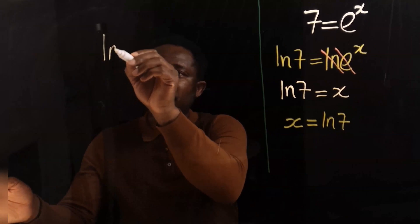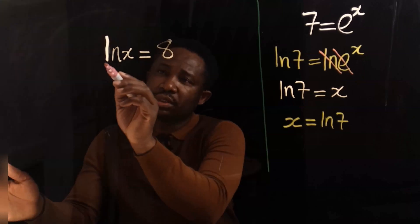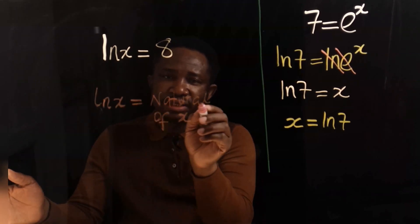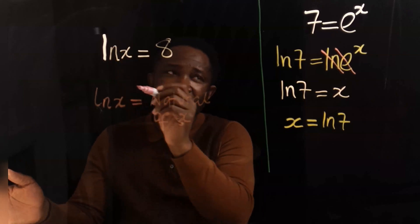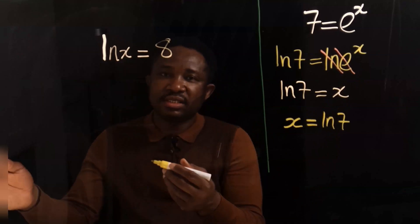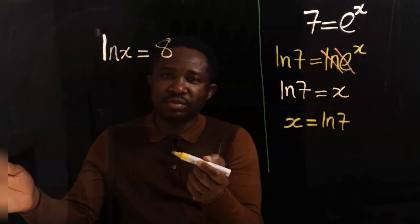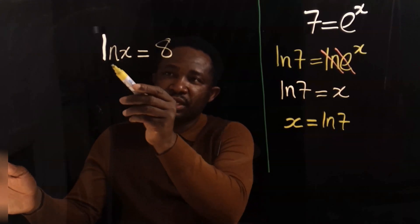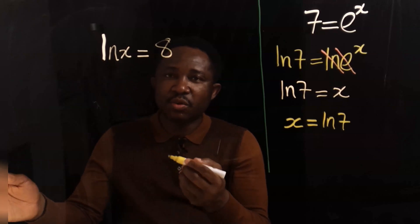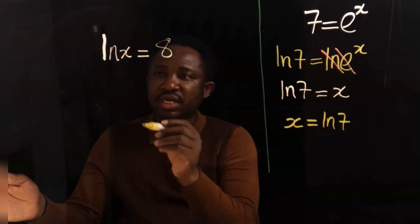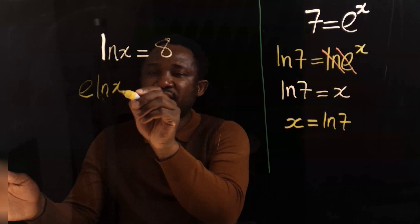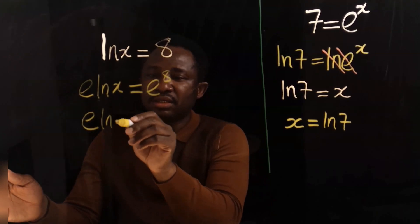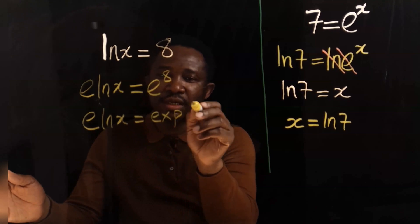Let's consider that the natural log of x equals 8. This ln is written as ln x, which simply means the natural log of x — note this is the letter l, not i. Our aim is to make x the subject. x is held by natural log. We're going to introduce exponential, because exponential will neutralize natural log. Hence, we're going to take the exponential of both sides: exponential of the natural log of x equals exponential of 8.